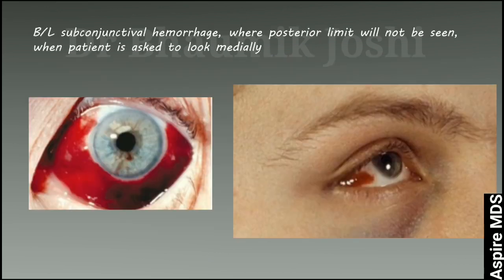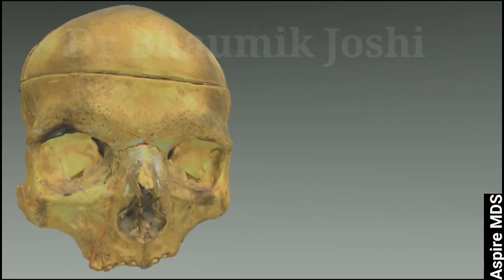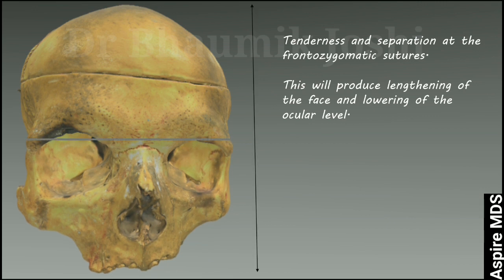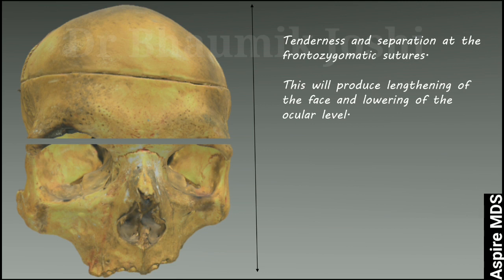On examining the eyes, there will be subconjunctival hemorrhage where the posterior limit cannot be seen — even if you ask the patient to look medially, you will not be able to trace the posterior limit of the hemorrhage. Because there is separation at the frontozygomatic suture, there will be tenderness over that area, and the separation leads to lengthening of the face and lowering of the ocular level.